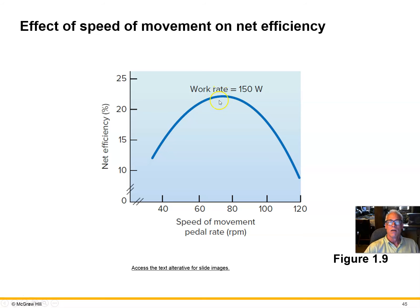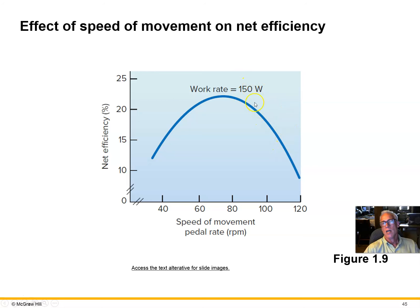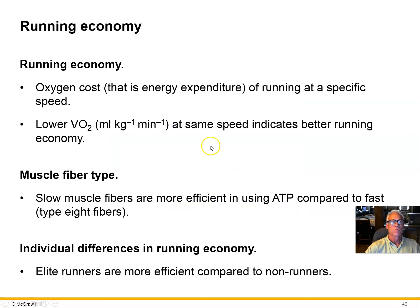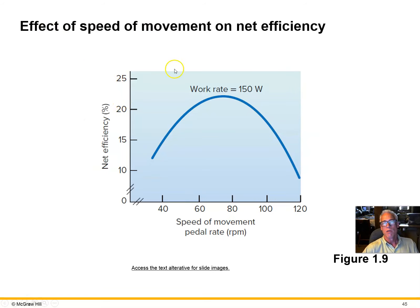Here's a graphical representation of calculated efficiencies at different pedaling speeds against a constant load. At a constant work rate of 150 watts, if you achieve that wattage at a slow pedaling rate with high resistance, you'll get a lower efficiency. Around 75 RPM you get maximum efficiency at 150 watts. As you increase RPMs further — reducing resistance to stay at 150 watts — efficiency starts to go down. That's why professional cyclists know exactly the best pedaling rate to maximize efficiency at any given wattage.